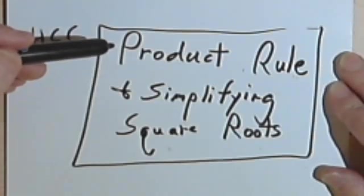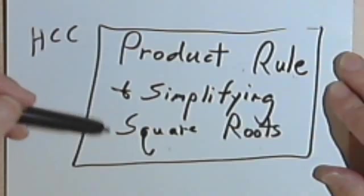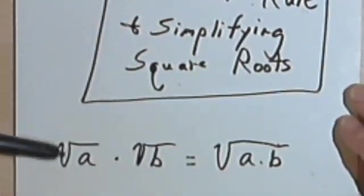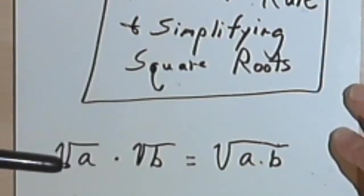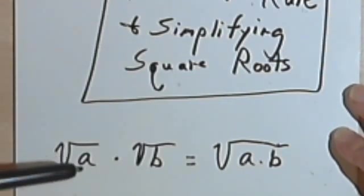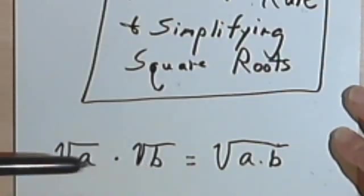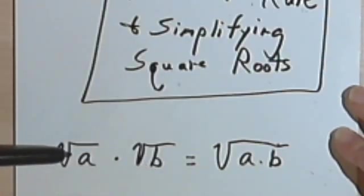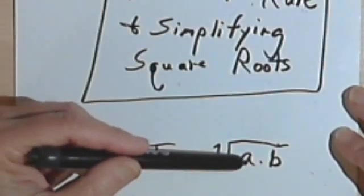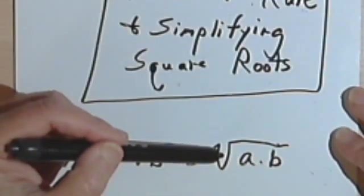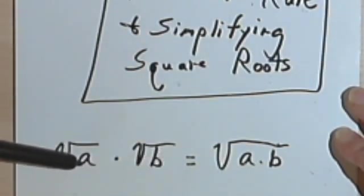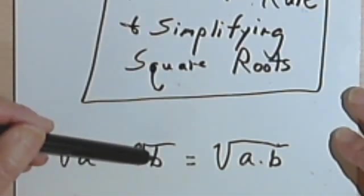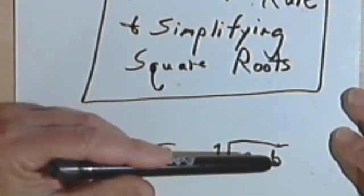This video is going to be about the product rule and simplifying square roots. The product rule is really quite simple and you're going to find it pretty useful as you work with square roots. All the product rule says is this: if we have two numbers, the number a and the number b, the square root of a times the square root of b equals the square root of a times b.